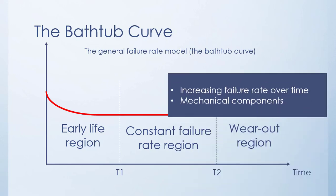The third region is referred to as the wearout region. It is characterized by an increasing failure rate over time. Most electronic components do not exhibit such a region, with the exception of electromechanical devices such as relays. On the other hand, most if not all mechanical components that are subjected to rotating and alternating motions wear out with time. This is exemplified by the behavior of cutting tools, fatigue loading on structures, and wear out due to friction between mating surfaces.